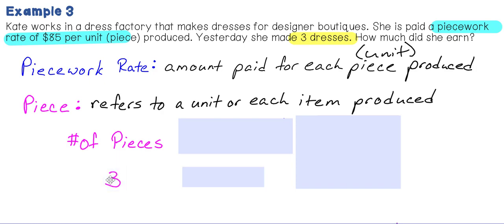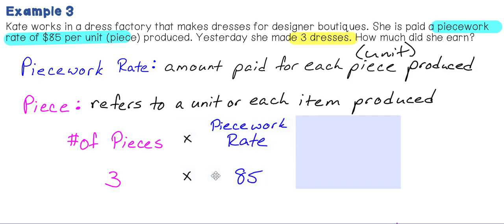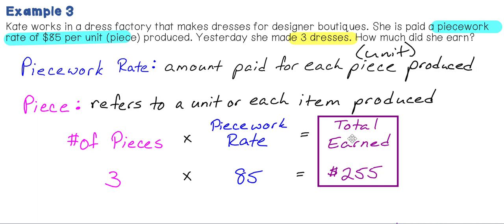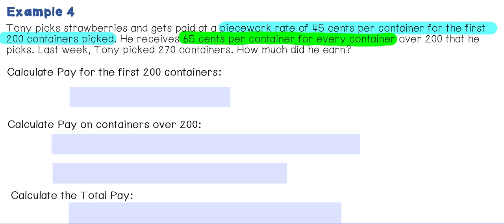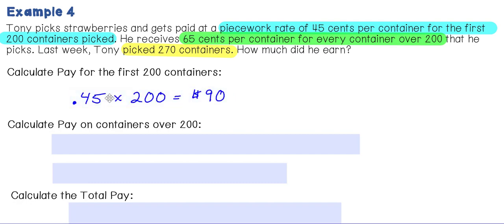Three dresses multiplied times the piecework rate of $85 gives her total earnings of $255. In example four, Tony picks strawberries and gets paid at a piecework rate of $0.45 per container for the first 200 containers picked. He receives $0.65 per container for every container over 200. Last week, Tony picked 270 containers. To find the pay for the first 200 containers: 200 times $0.45 equals $90.